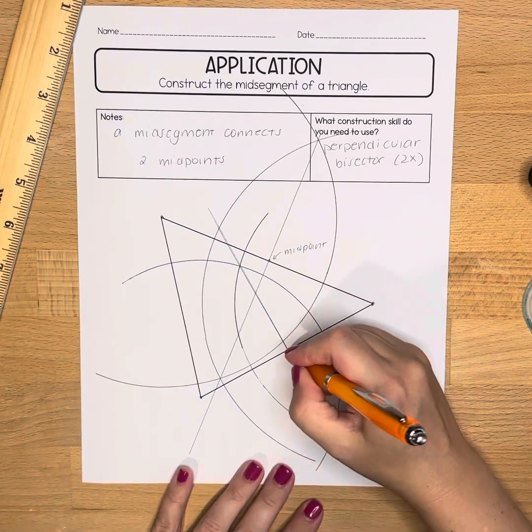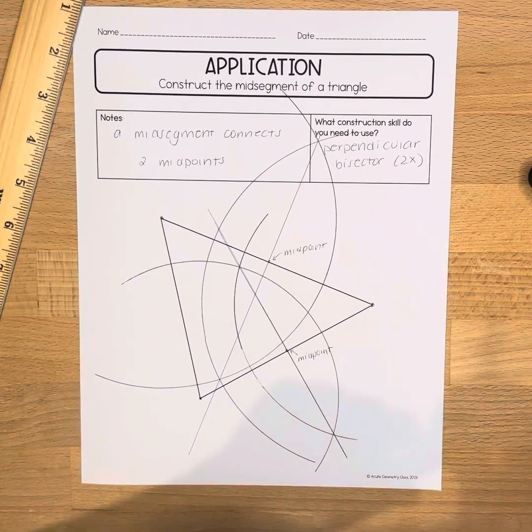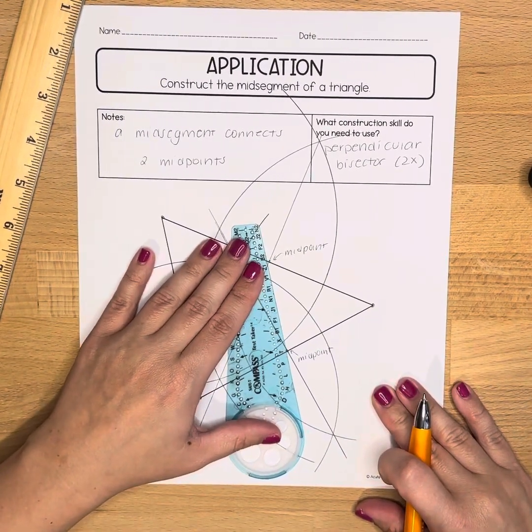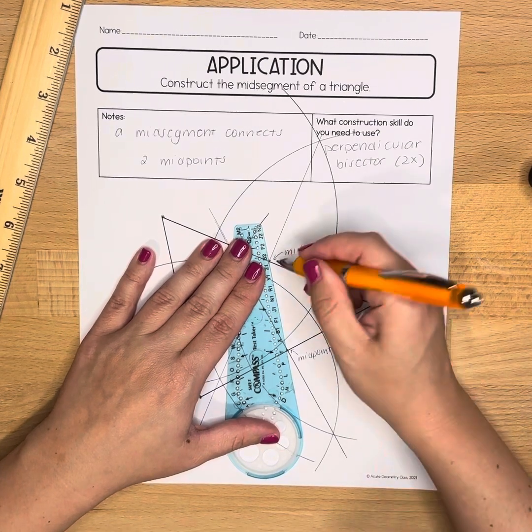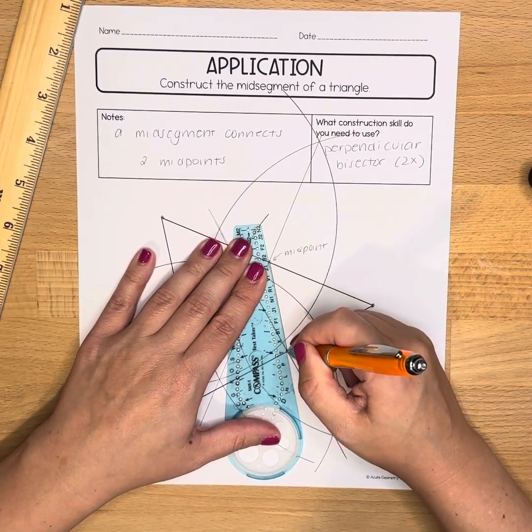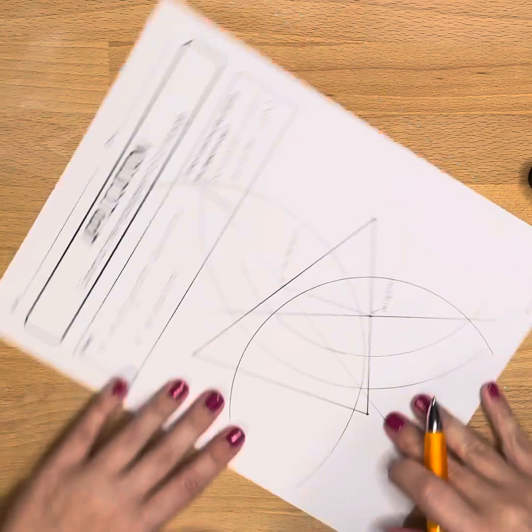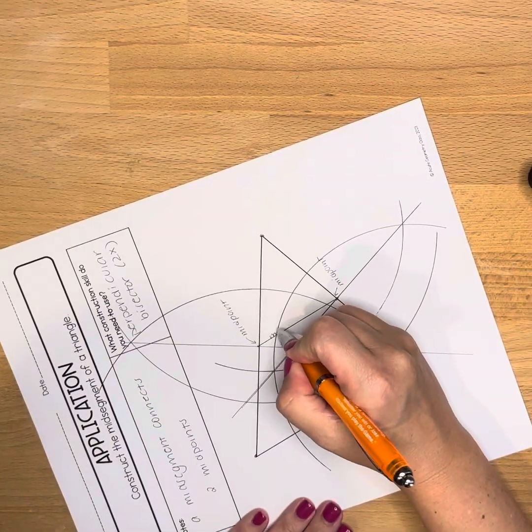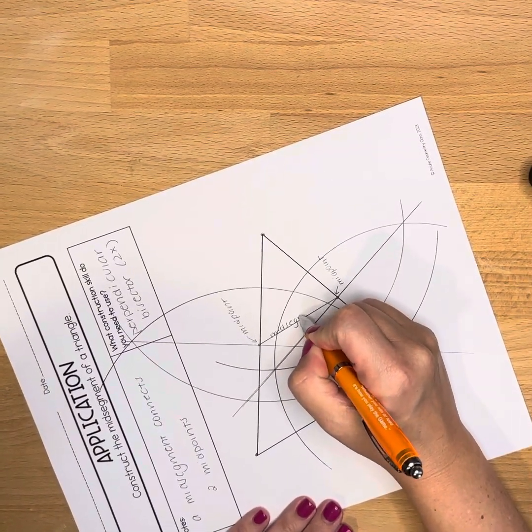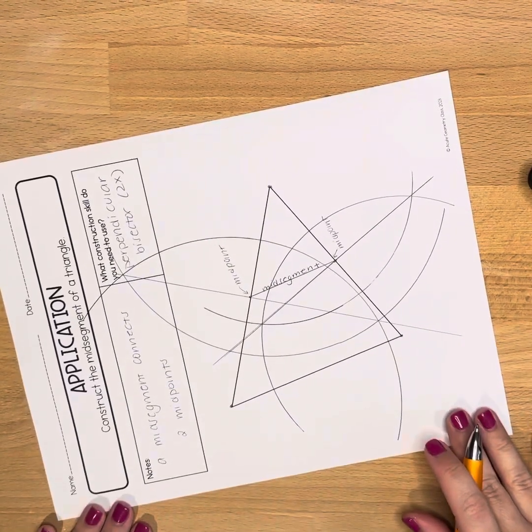Now you're going to use your straight edge to connect the two midpoints. And this line segment right here, you can see me labeling it, this is our mid segment of the triangle.